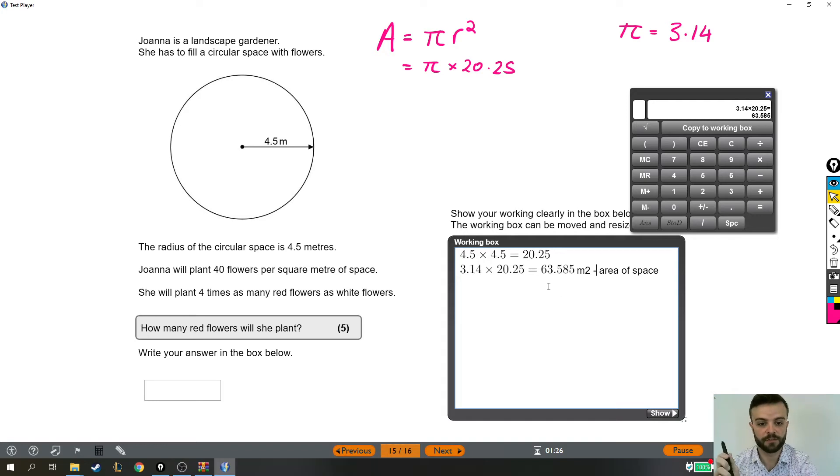So she can get 63.585 lots of 40 flowers in there. So I hope that makes sense. Because we've got 63 and a bit meters squared, we can get 63 and a bit lots of 40 flowers in that space. Let me explain one more different way. A meter squared looks on this diagram something like that. And we've worked out that you can get 63.585 of these little squares inside this entire thing. So 63 meter squared means that we have 63 of these square meters in our circle. And each one of those we're told she's going to put 40 flowers in. So if we have 63 of those, that's 63 lots of 40 flowers that we can put in.